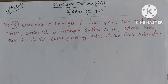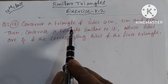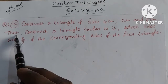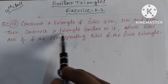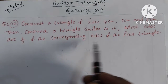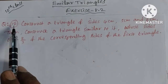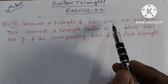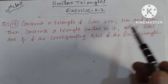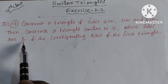We are going to construct a triangle of sides 4 cm, 5 cm, and 6 cm. Then, construct a triangle similar to it, whose sides are 2/3 of the corresponding sides of the first triangle — the same as question number 11. In this case, we will draw the similar triangle inside this triangle, proportional to the 2/3 ratio.